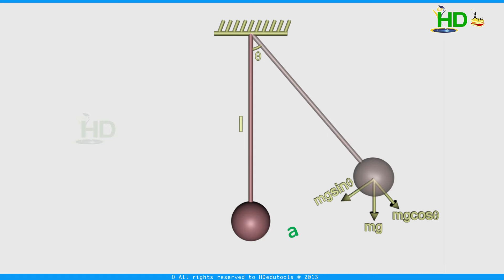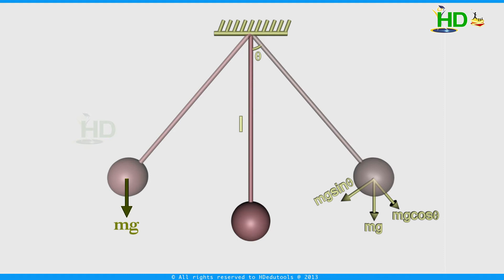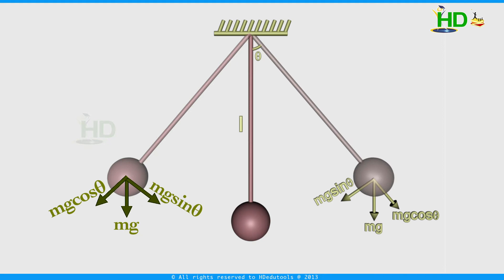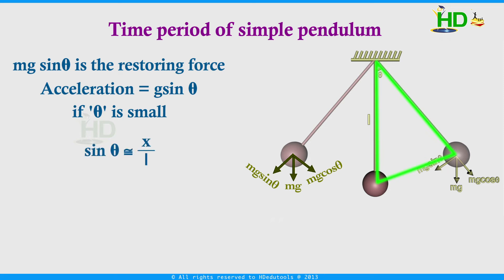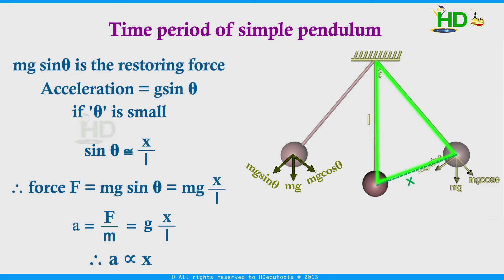Similarly, at the extreme position, mg is vertically downward and can be resolved into mg cos θ and mg sin θ. Because of mg sin θ, the pendulum moves back, meaning the acceleration g sin θ is directed towards the mean position. At any point during its path, the acceleration is always directed towards the mean position. The magnitude of acceleration is g sin θ. For small θ, we can write sin θ ≈ x/L, where L is the length of the pendulum and x is the displacement. Therefore, acceleration ≈ gx/L, meaning acceleration is proportional to displacement.